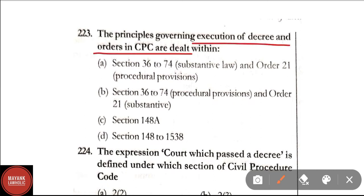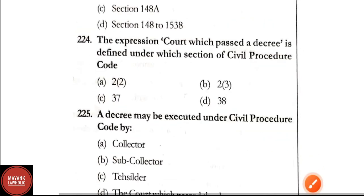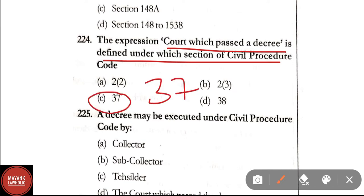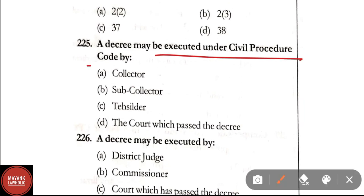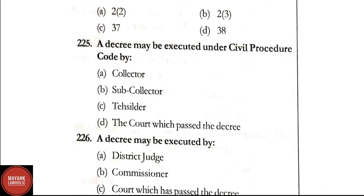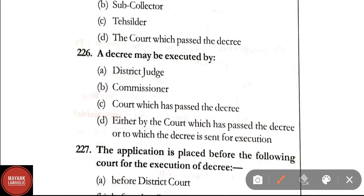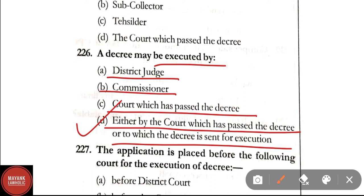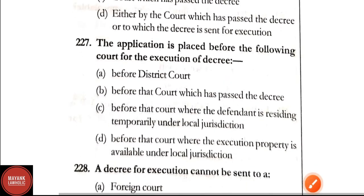Question 223: The principles governing the execution of decrees and orders in CPC are dealt with in — Section 36 to Section 74 for substantive law, and Order 21 for procedural provisions. Correct answer: Option A. Question 224: The expression 'court which passed a decree' is defined under which section? Correct answer: Option C, Section 37. Question 225: A decree may be executed by — collector, sub-collector, tahsildar, or the court which passed the decree? Correct answer: Option D, the court which passed the decree. Question 226: A decree may be executed either by the court which passed the decree or to which the decree is sent for execution. Correct answer: Option D.